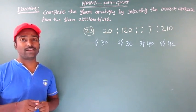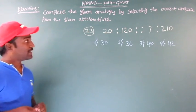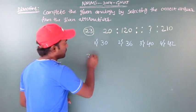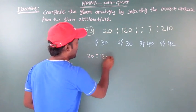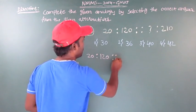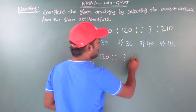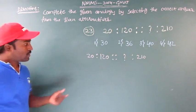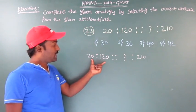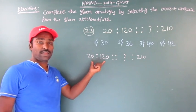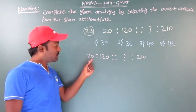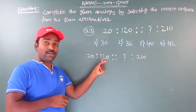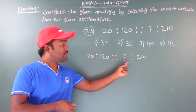The key is right idea at right time. So I will write the given question here: 20 colon 120 double colon question mark colon 210. So this is the question. What is the relationship between 20 and 120? If you find that relation, the same relation can be used to find this missing number.